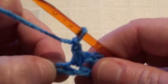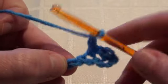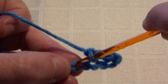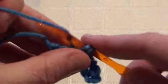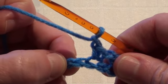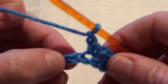Chain and chain one, skip one chain stitch and single crochet into the next chain. Chain one and single crochet into the last chain, skipping this one.